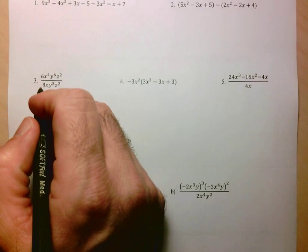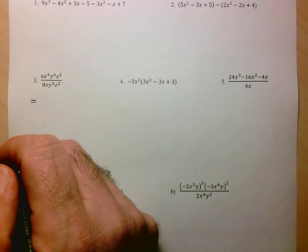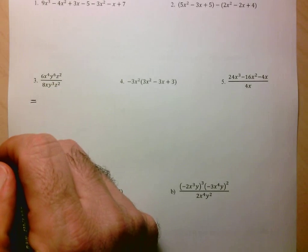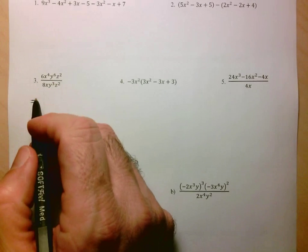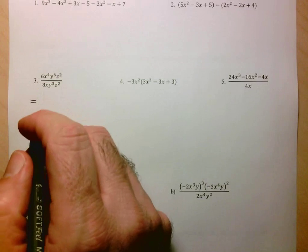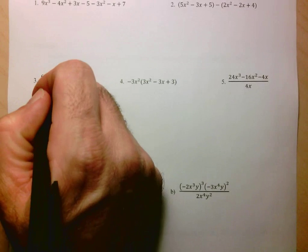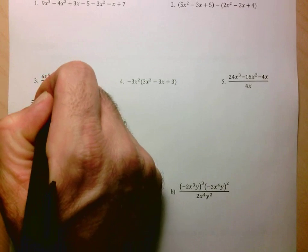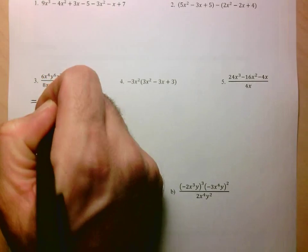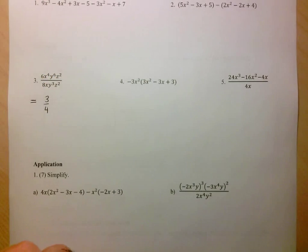Let's start with 6 over 8. That doesn't give me an integer, but it can be reduced. So 6 over 8 reduces to 3 over 4. 0.75 would also be acceptable.